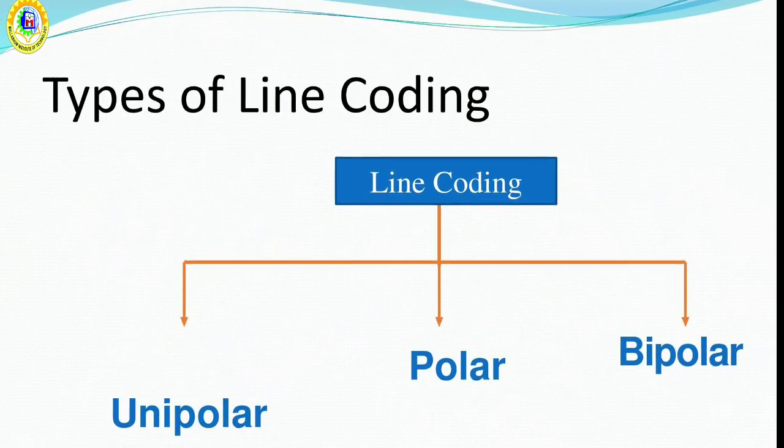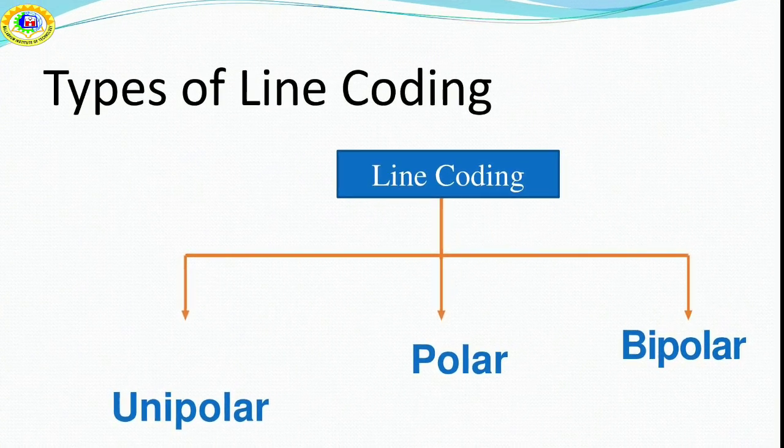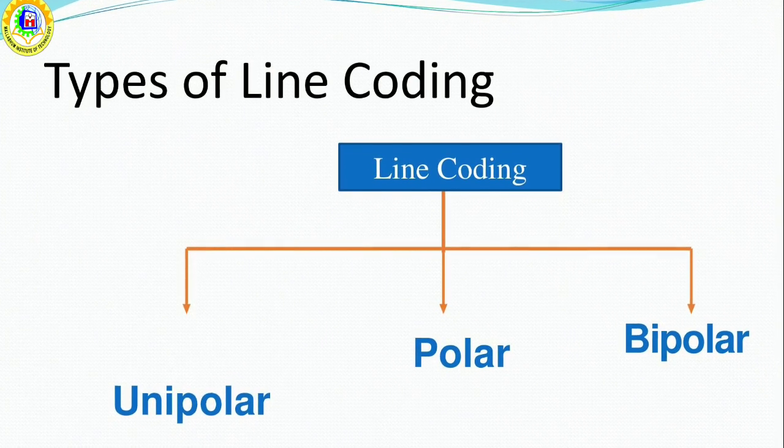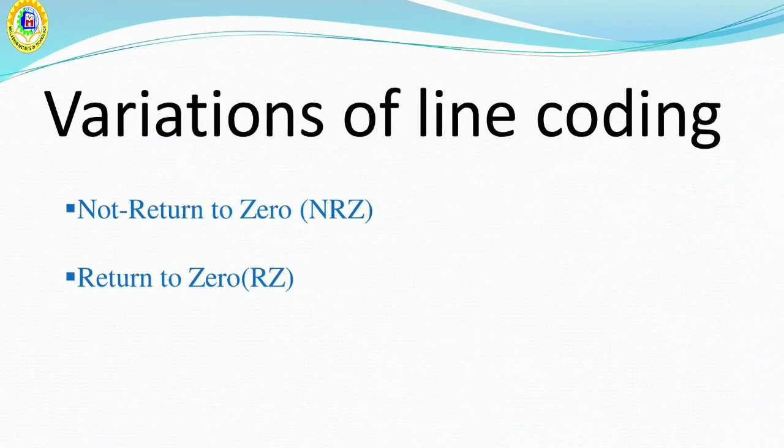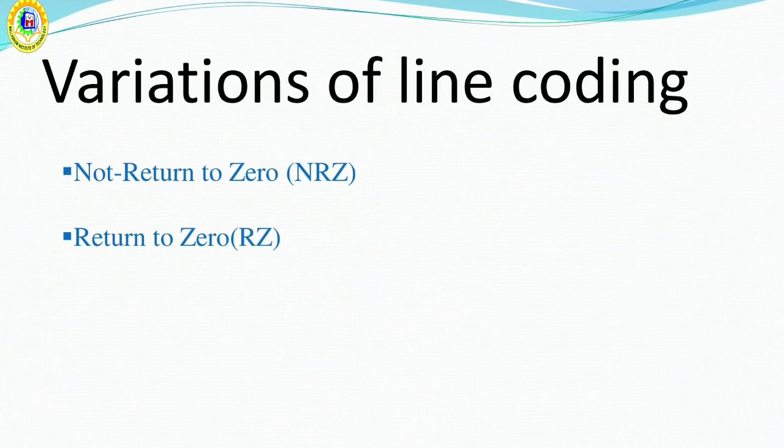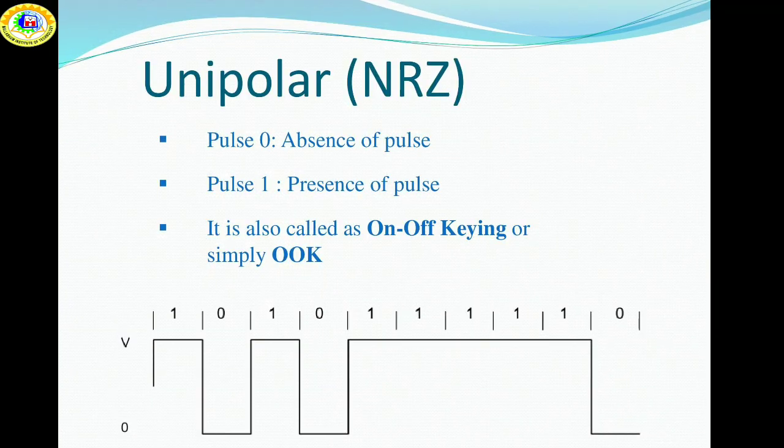Types of line coding. There are three types of line coding techniques: one is unipolar, second is polar, third is bipolar. There are two variations of line coding present: one is return to zero, another is non-return to zero. First, starting with the unipolar signaling.